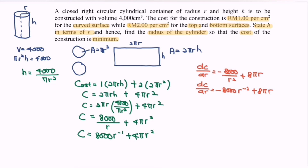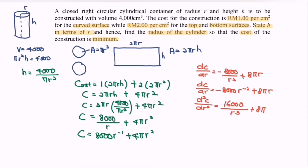Differentiating a second time with respect to r, the second derivative is d²C/dr² = 16000/r³ + 8π.